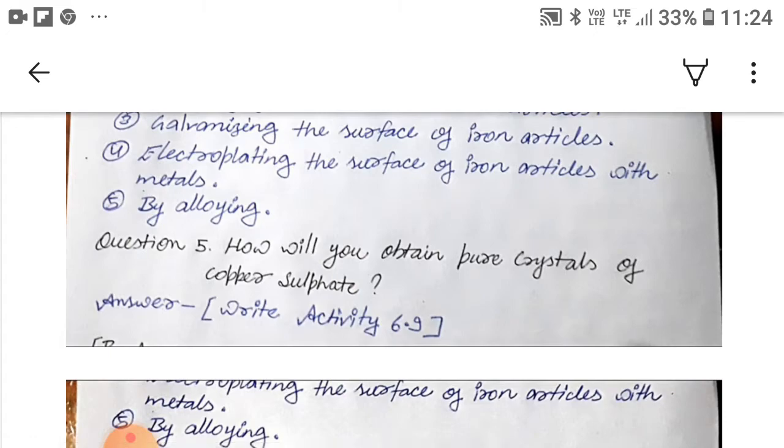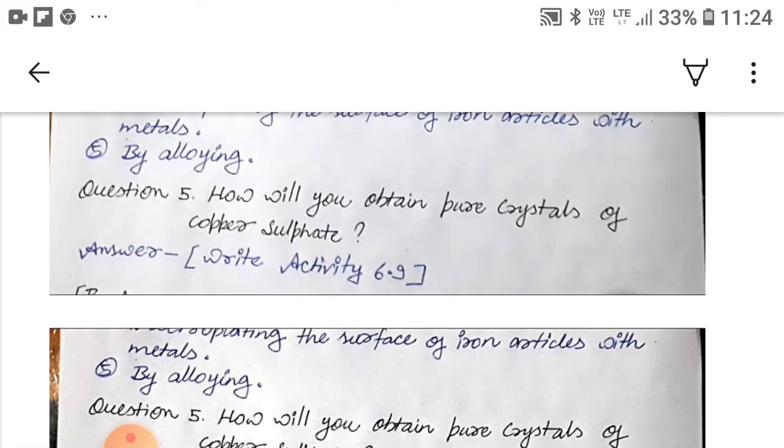So its answer, rusting of iron can be prevented in many ways. By avoiding direct contact with air and moisture, applying grease or oil on iron particles, painting the surface of iron particles, fourth, electroplating the surface of iron particles with metal, and fifth by alloying. Alloying means mixture of metals or non-metals.